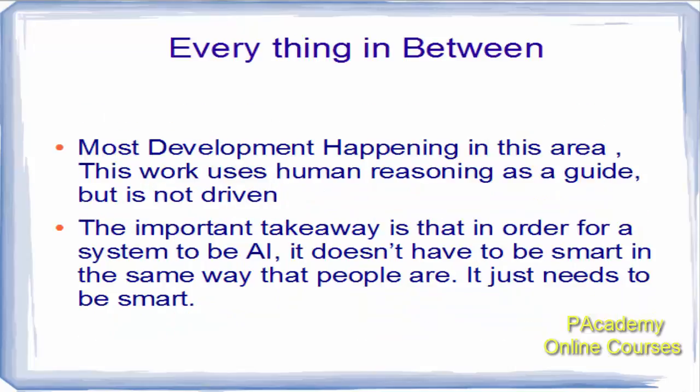Most of the AI systems we see in today's world lie in everything in between, and most development is happening in this area. The work uses human reasoning as a guide but is not driven by it. The important takeaway is that for a system to be AI, it doesn't have to be smart in the same way that people are — it just needs to be smart. These systems use human reasoning as a guide and need to be guided by humans to perform certain functions.